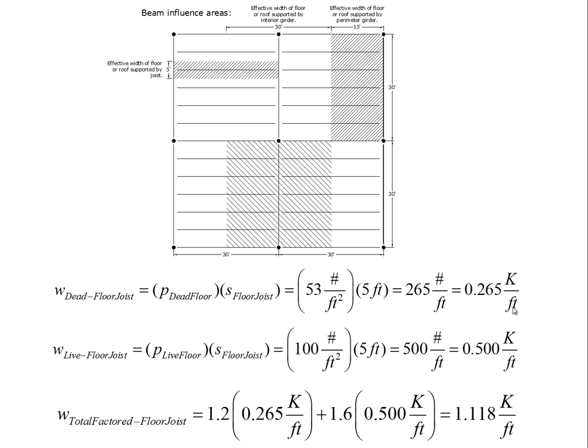The reason we convert to kips per foot is that some software programs only accept data in kips per foot — it's kind of the industry standard. One of the most common mistakes is calculating in pounds per foot and then entering that number into a computer program, which interprets it as 265 kips per foot, overloading your structure by a factor of 1,000 — results that are quite horrifying. So as soon as you get your answer, ask yourself what it is in kips as well.